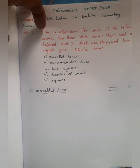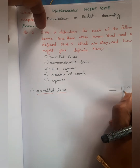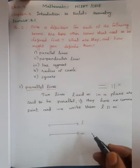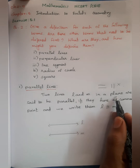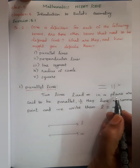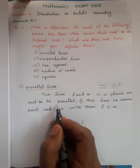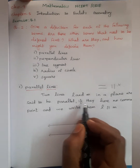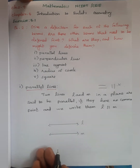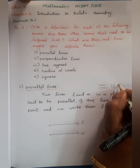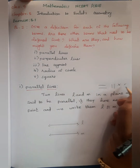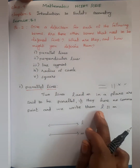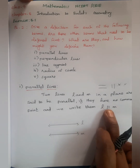Let's explain this line. Here are two lines L and M. L and M are two lines lying in the same plane — this is a plane, like a paper. This is a parallel line. We say L and M are parallel if they have no common point. We write it as L parallel to M.